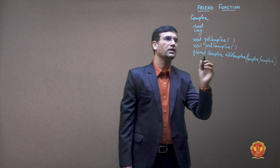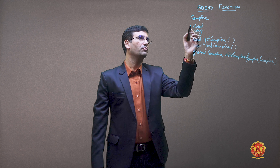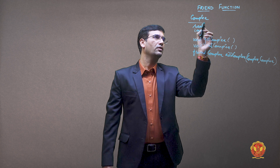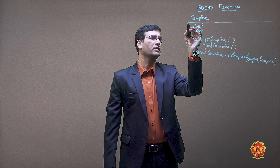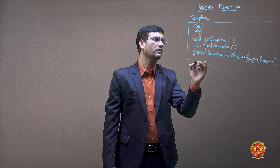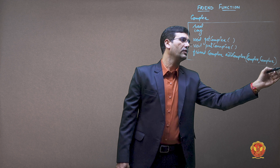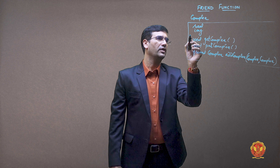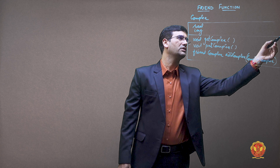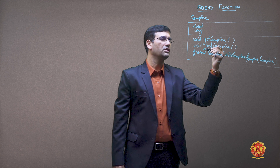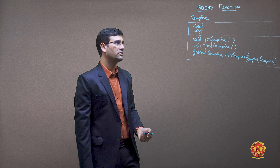In this way we will have a Complex class. These three functions will be defined — getComplex and putComplex in the public section, and addComplex as the friend function. The private section will hold the real and imaginary data members.